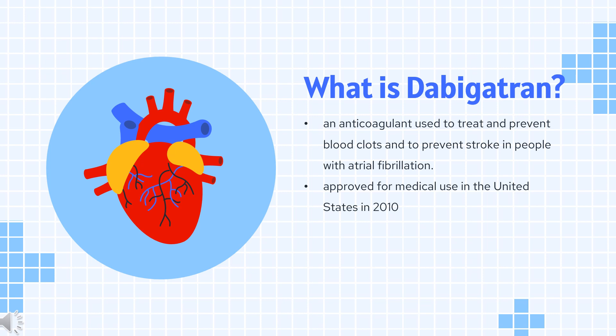Dabigatran, sold under the brand name Pradaxa, among others, is an anticoagulant used to treat and prevent blood clots and to prevent stroke in people with atrial fibrillation. Specifically, it is used to prevent blood clots following hip or knee replacement and in those with a history of prior clots. Dabigatran was approved for medical use in the United States in 2010.